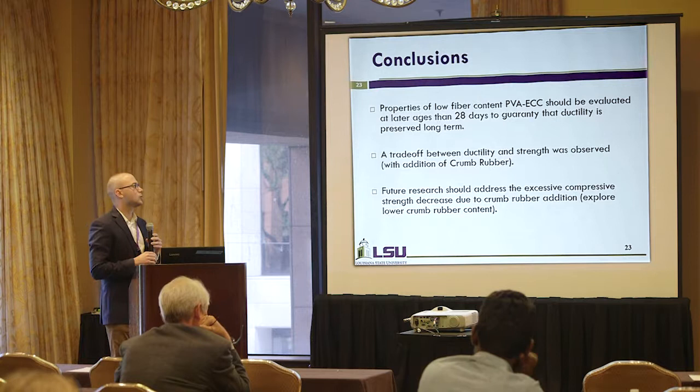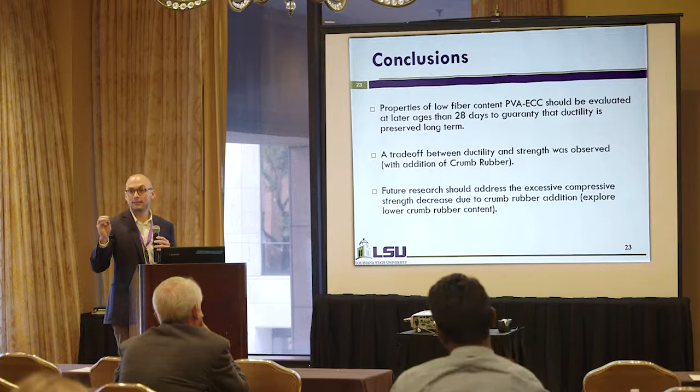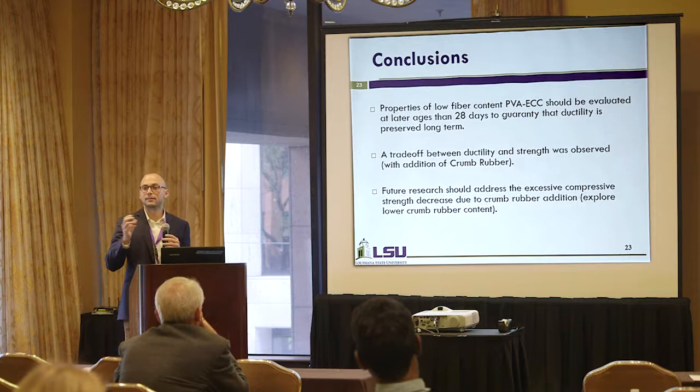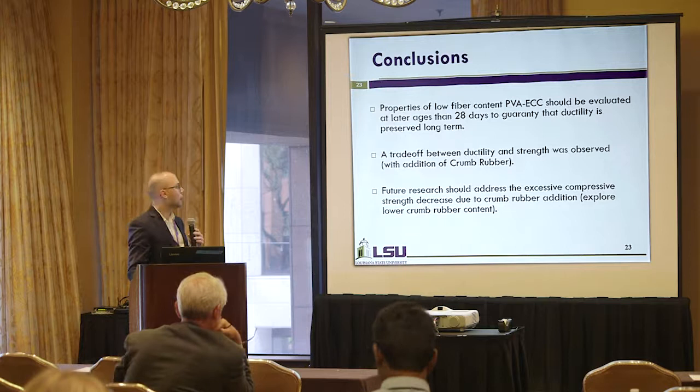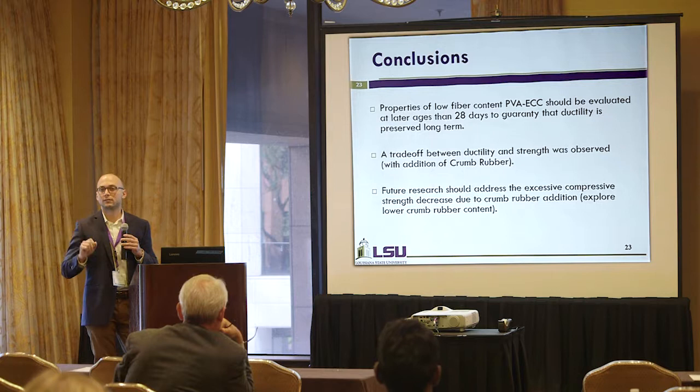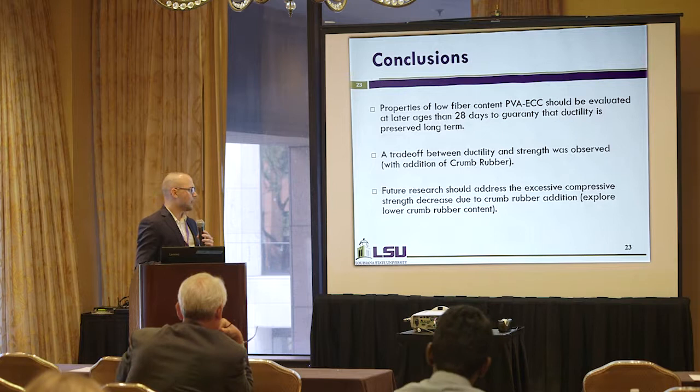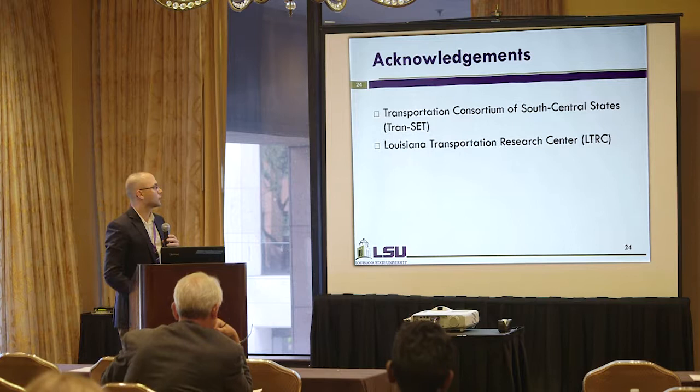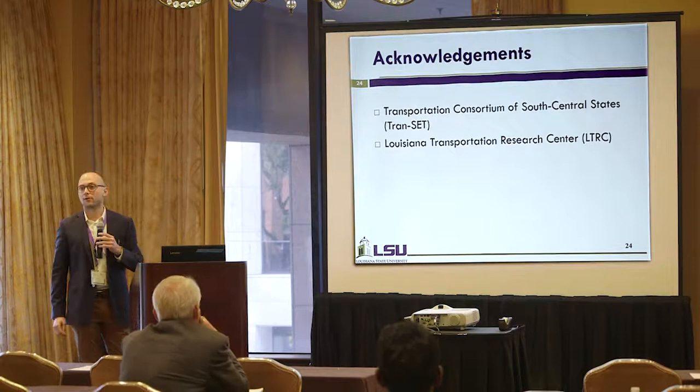A trade-off between ductility and strength was also observed for crumb rubber addition — the defects introduced into the cementitious matrix allow for more multiple cracking and deformation, but at the cost of some strength. For future research, we should address this by exploring different replacement contents of crumb rubber, as well as different types and gradations of crumb rubber. We would like to acknowledge TRANSIT for funding our project and LTRC for all the funding and help they have provided. Thank you very much.